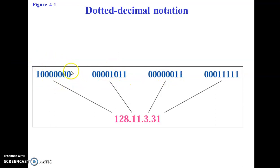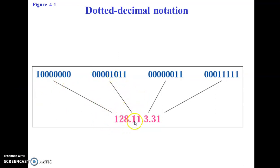Each group is going to be treated as a byte. So this is your first byte, second byte, third byte, and the fourth byte. This 8-bit value is being converted into the decimal value. The decimal value for the first 8 bits is 128, for the second is 11, for the third is 3, and for the fourth 8 bits the decimal value is 31. This is the way of representing the 32-bit IP Address in dotted decimal fashion.